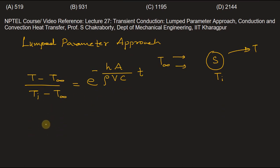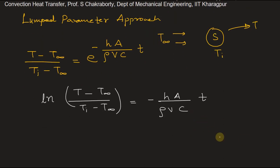we can write ln[(T - T∞)/(Ti - T∞)] = -hA/(ρVC) × t, and we need to find this t.